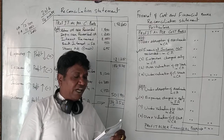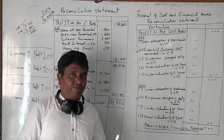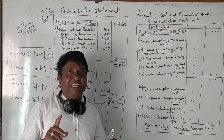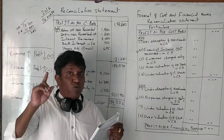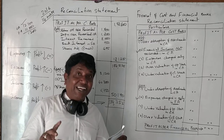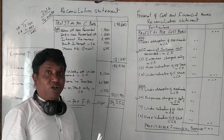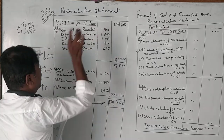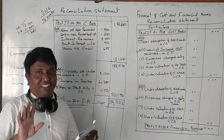Administrative overhead over-recovered in cost accounting — expenses may be over-recorded. In cost accounting, excess administration overhead was recorded, more money than actually incurred. Administrative overhead over-recovered: 1,700. This is not added.